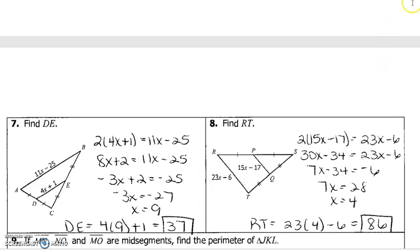This time they didn't just ask for x. You had to use x to find the measure they wanted. So they wanted the length of the mid-segment for this one. So if x is 9, we're going to plug in a 9, and we get 37 for DE. And then this one wanted the length of the base. So if we plug in 4 for x, we can find the base of 86.